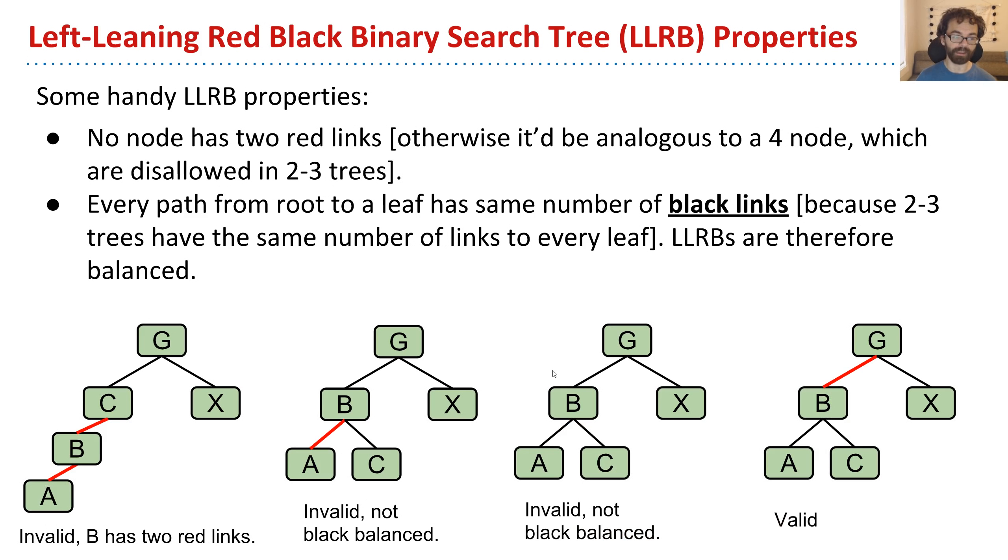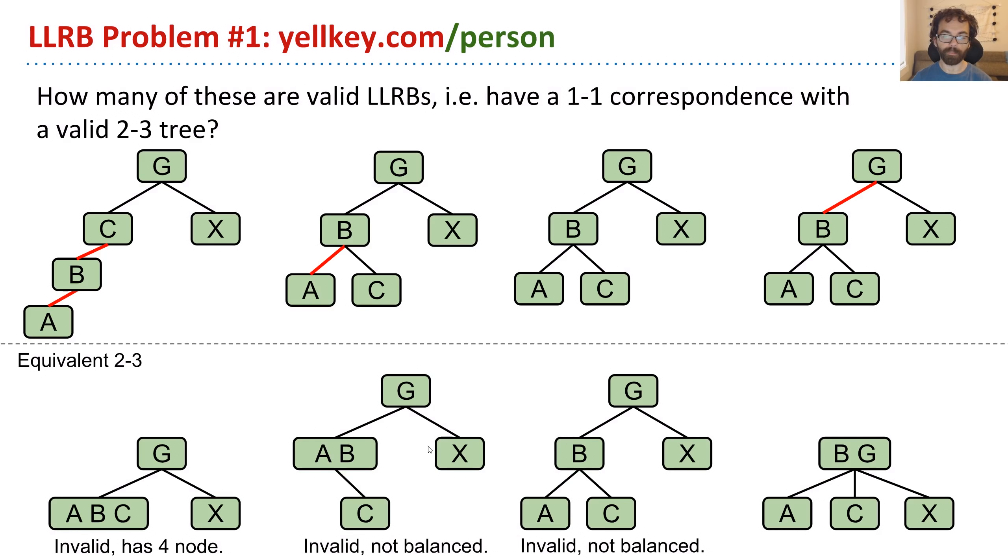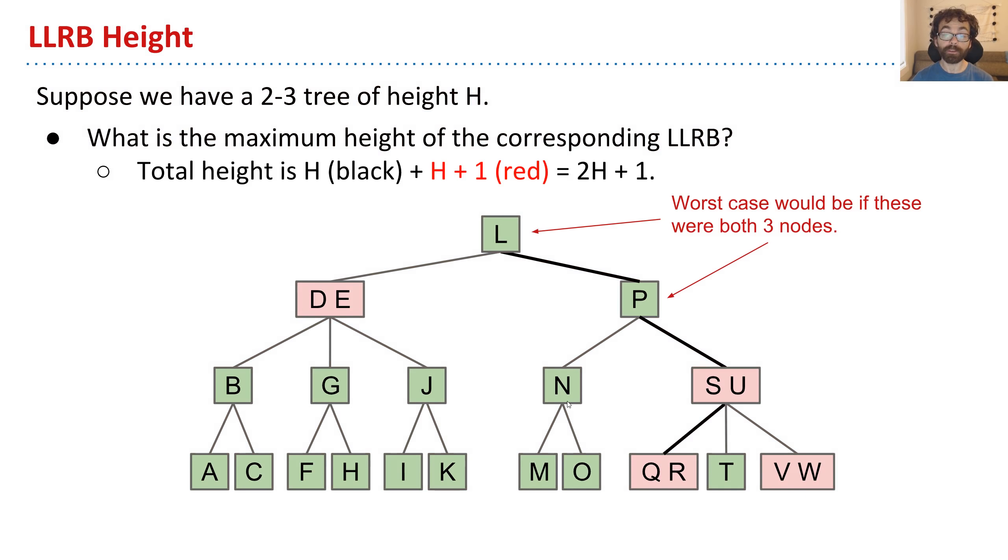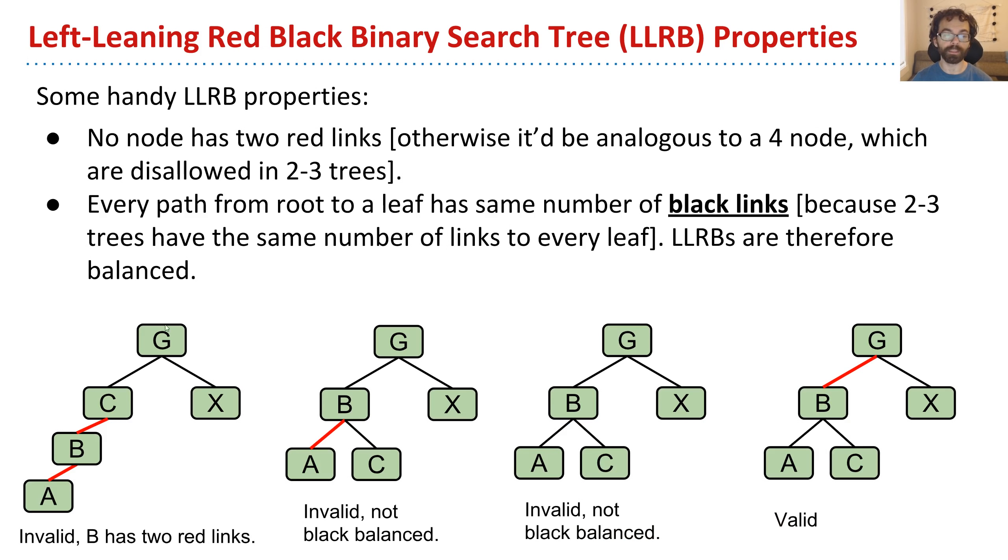So now, knowing that, we can go back and do that hard LLRB valid problem just directly, natively, without having to think about the corresponding 2-3 tree. That is, this problem we did earlier here, where we looked at the equivalent 2-3 trees and dismissed them as invalid, now we can do it natively, looking only at the 2-3 trees. So here we could say, well, this is invalid. B has two red links. This tree, also invalid, it's not black balanced. C is two black links away, X is one black link away. Here, A is two black links away, X is one black link away. Oh, and that one, that one's fine.